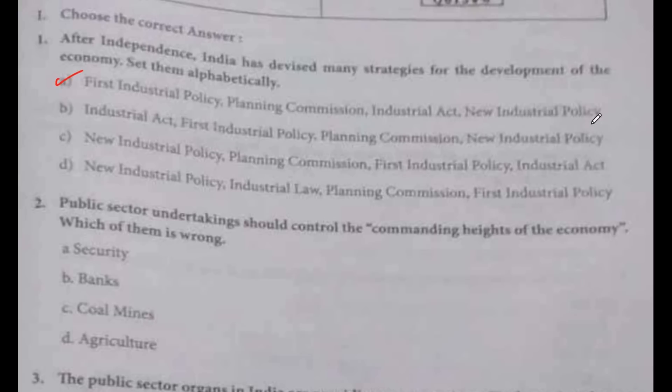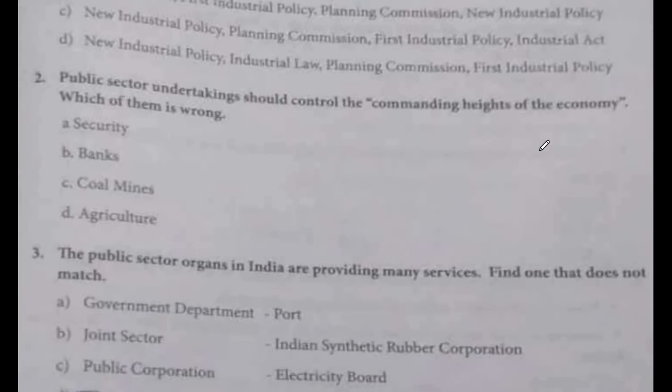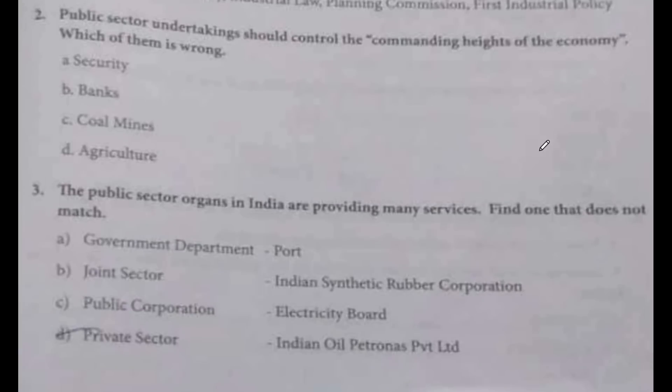The alphabetical order is: first, Industrial Act; then Industrial Policy; then New Industrial Policy; then Planning Commission. This is the correct alphabetical order.